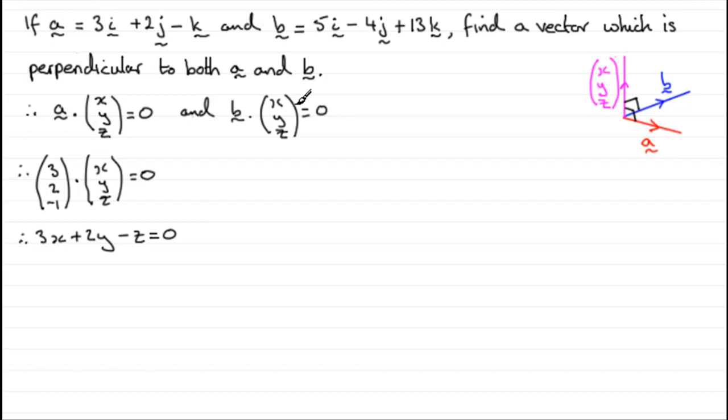And if we do the same for this vector over here, B, B being 5, minus 4, and 13, if we were to dot that with x, y, z, we know it'll equal 0, and we're going to get the equation 5x minus 4y plus 13z equals 0.